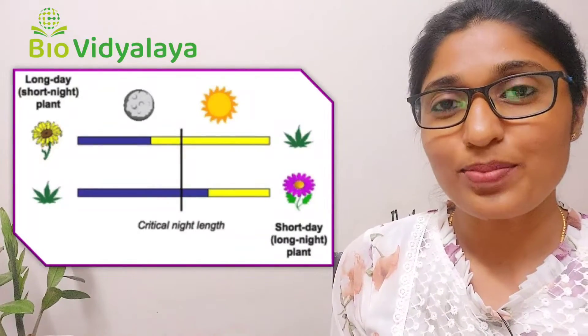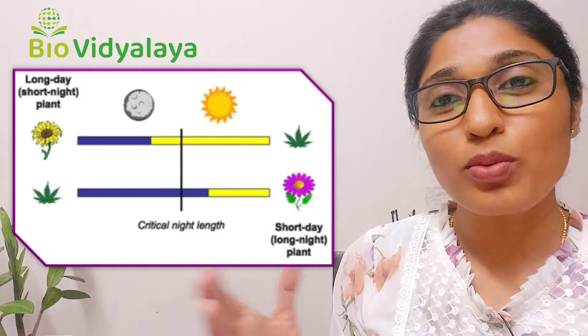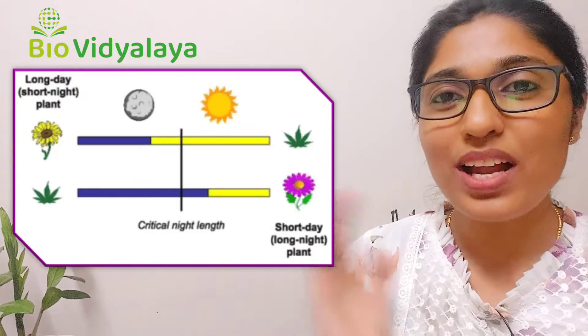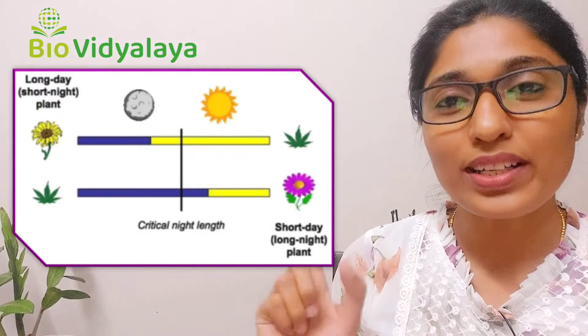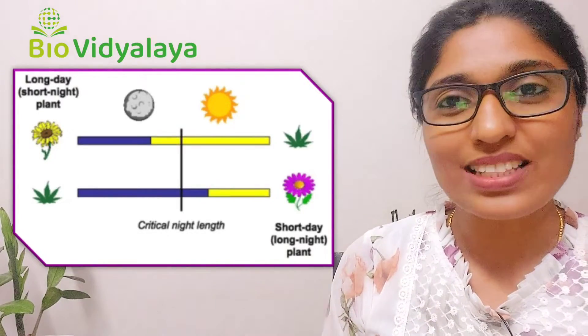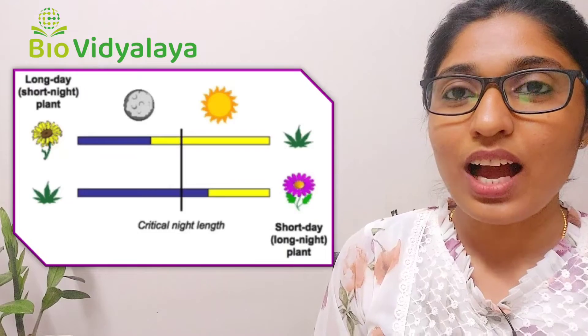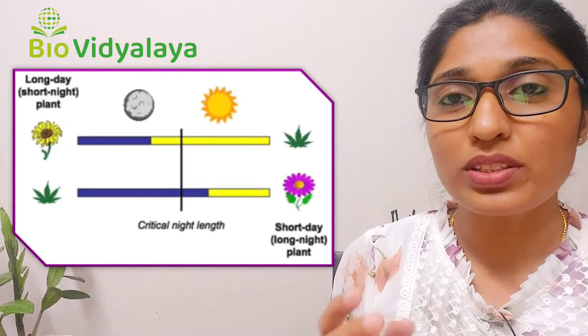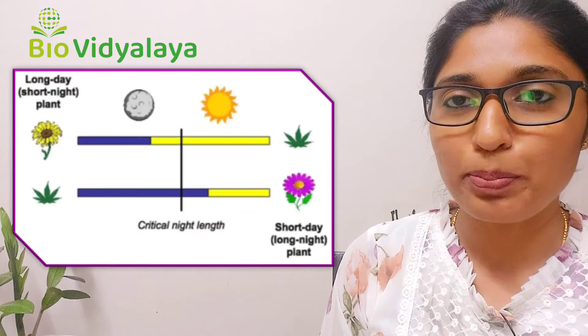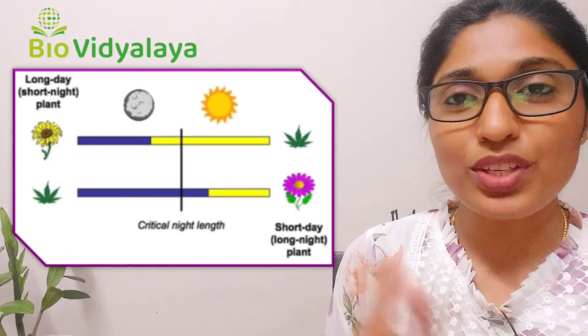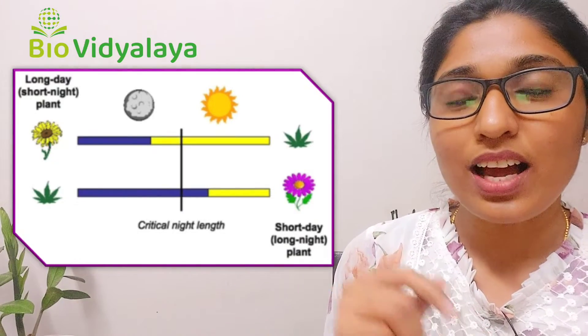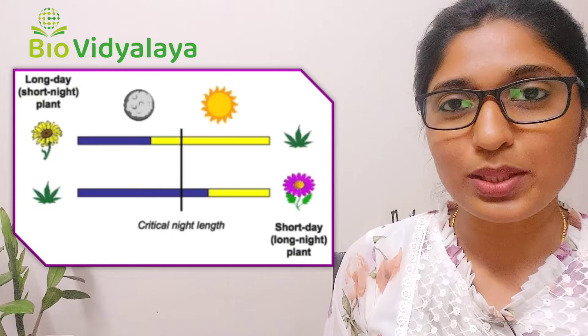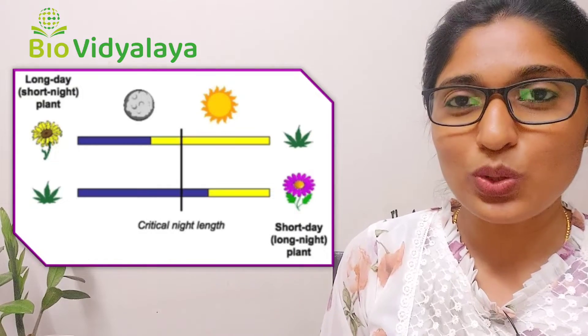Some plants require a short night length, meaning they need a long day length — more than 12 hours. Such plants are called long day plants, for example spinach. I already made a video about short day plants and long day plants; I will put the link in the description below.